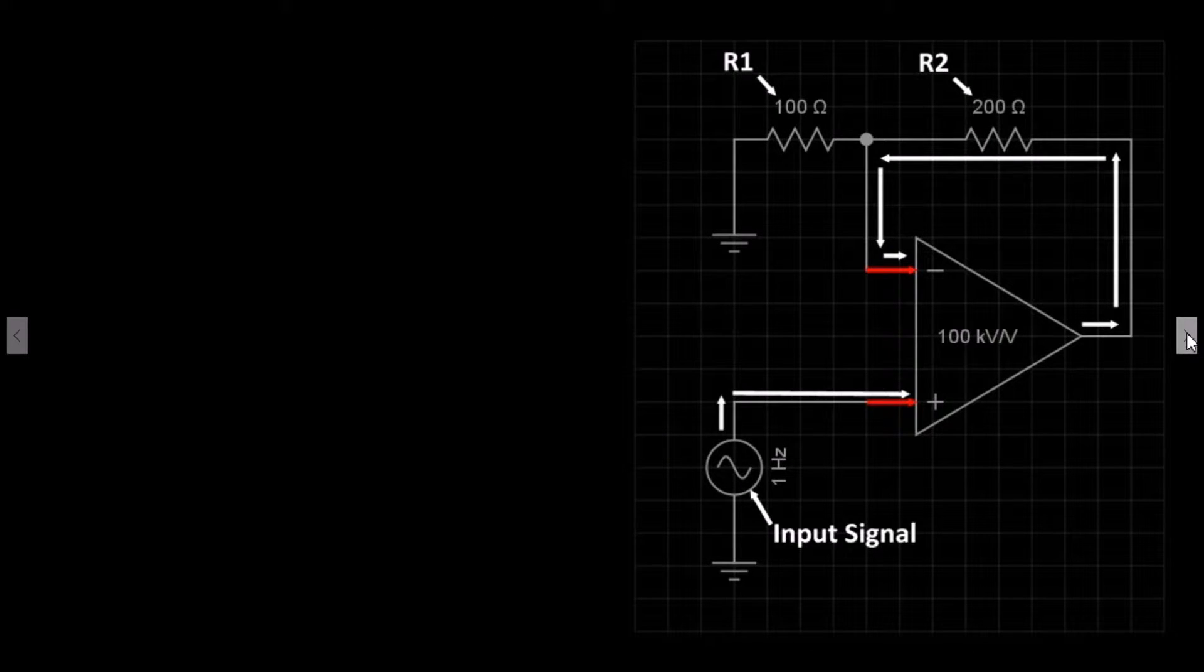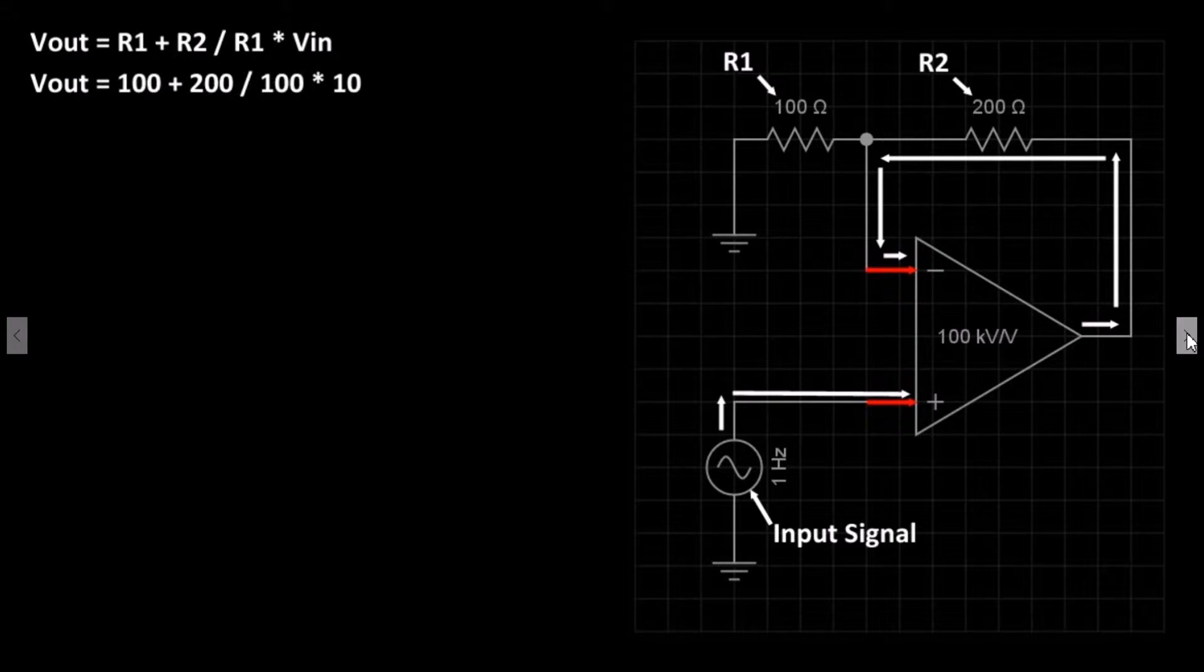To calculate the voltage output we use the following formula: Voltage out equals R1 plus R2 divided by R1 multiplied by the voltage input. So using the values from our sample circuit, the formula becomes voltage out equals 100 plus 200 divided by 100 multiplied by 10.